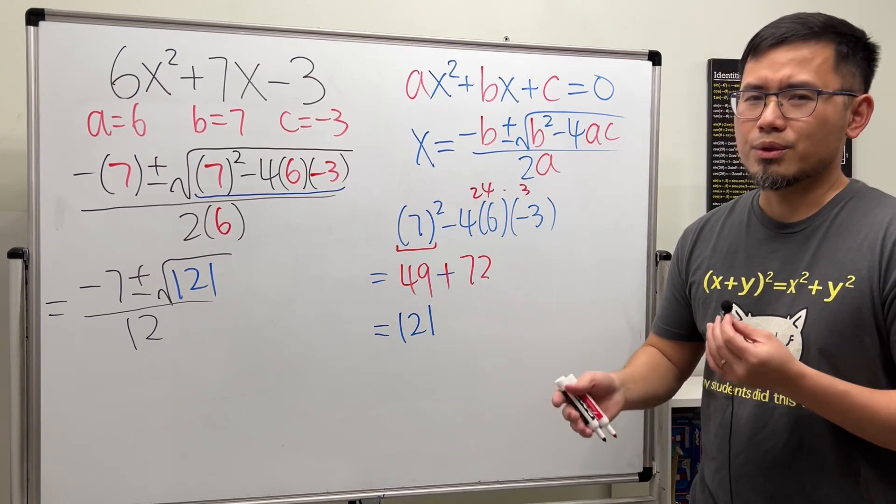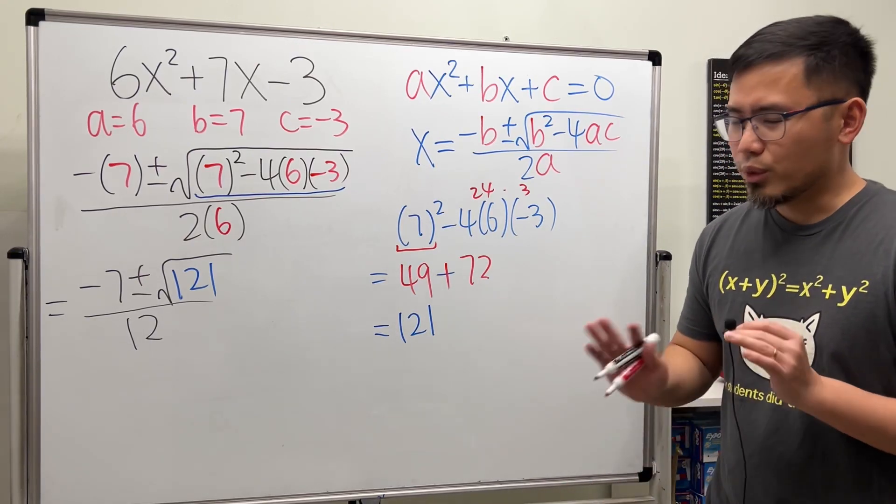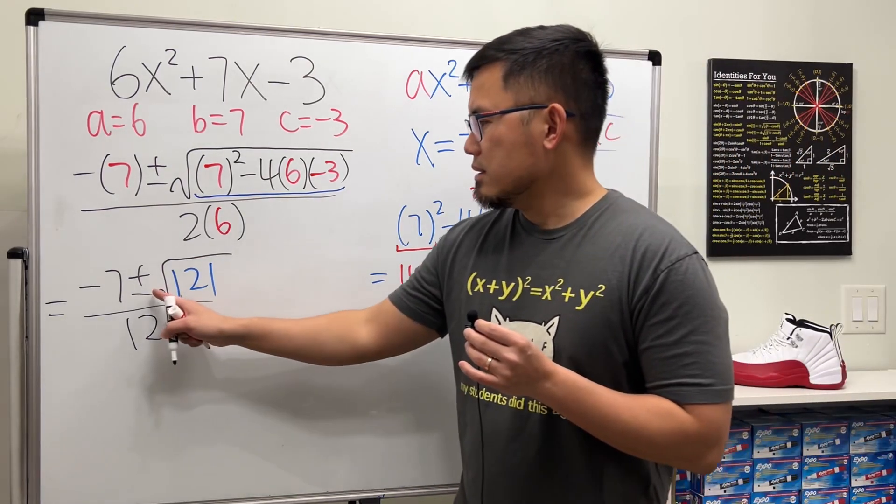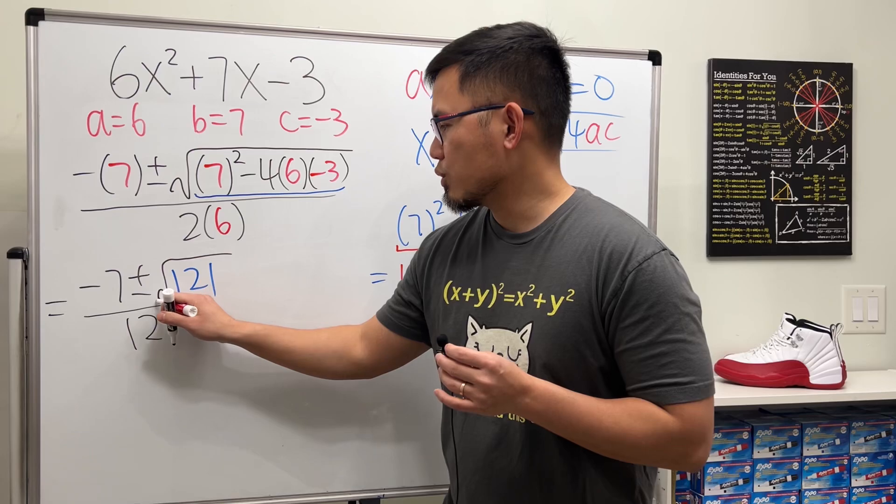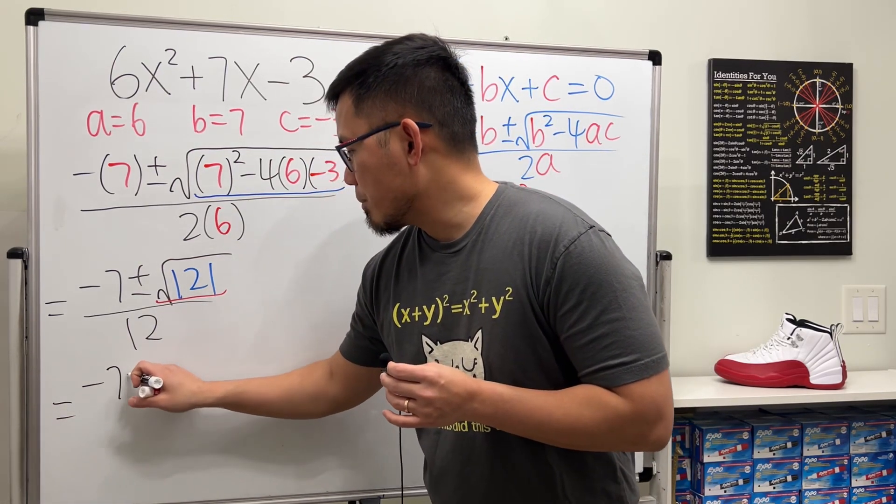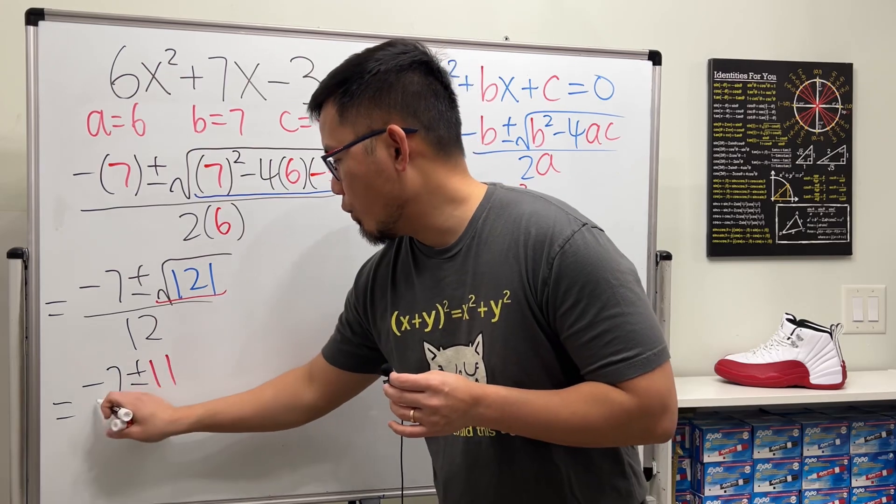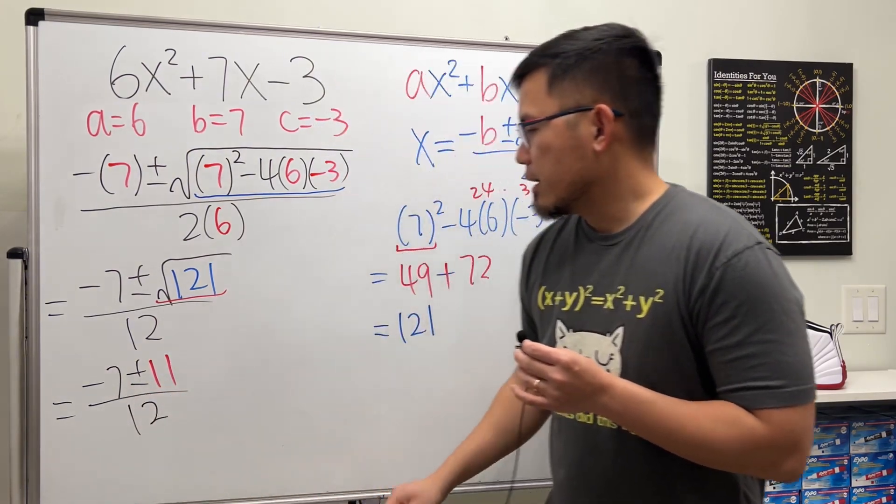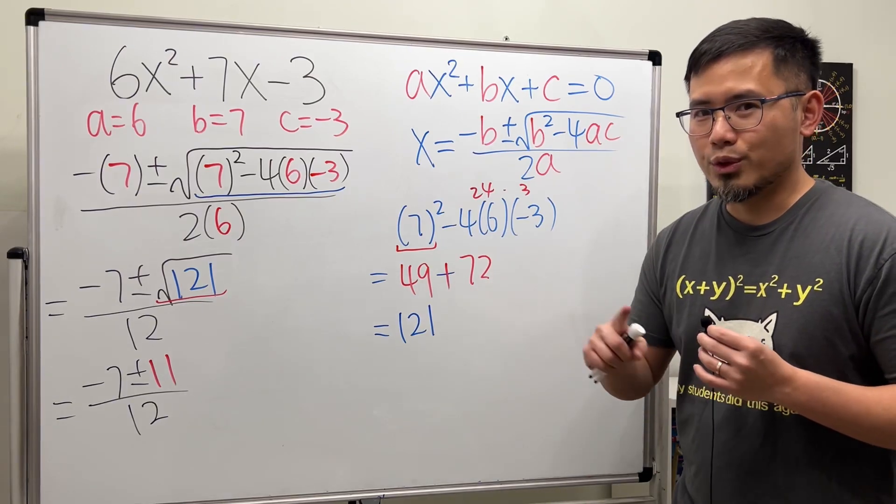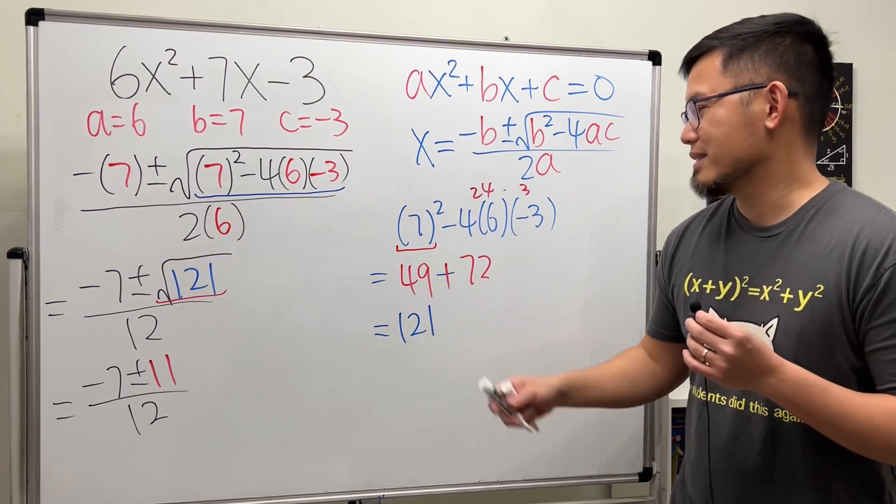You don't have to think about what times what is equal to 18 and then plus them together. No guess and check. Nothing like that. Then this is plus or minus square root of 121. That's just 11. So we are looking at negative 7 plus or minus 11 over 12. And do you guys want me to erase the board regularly or you want to see magic? Magic? Okay. Good choice.